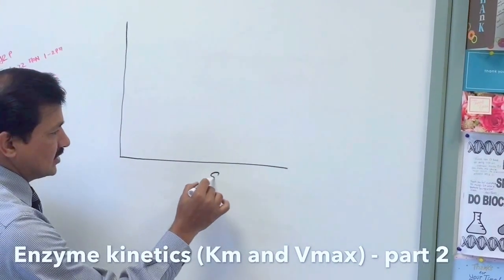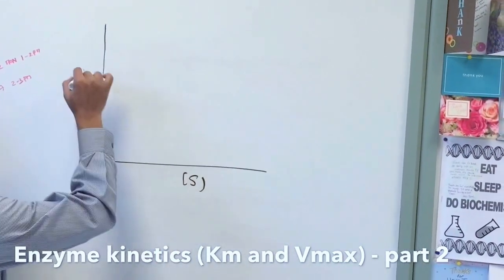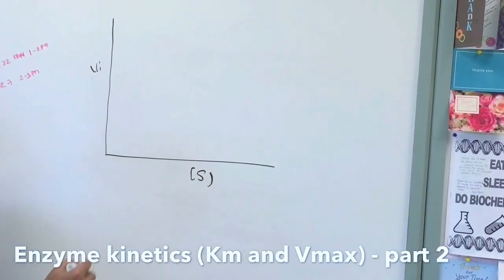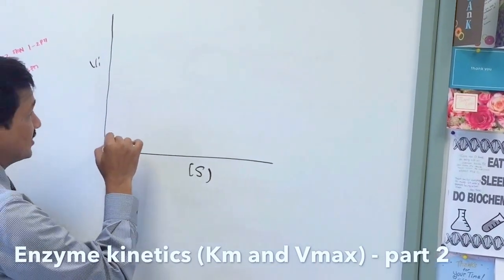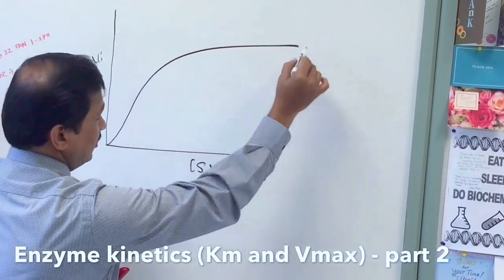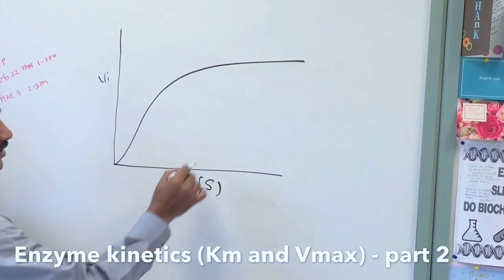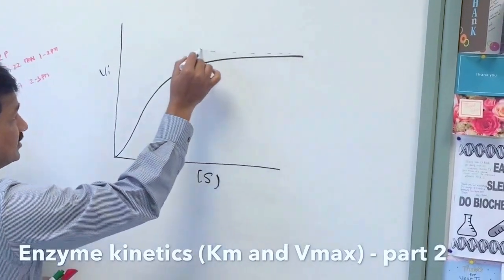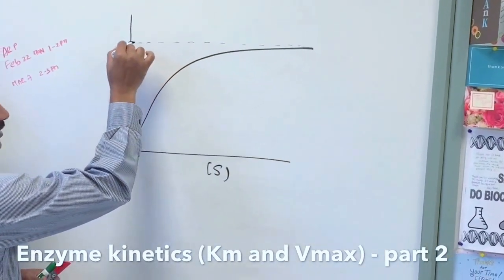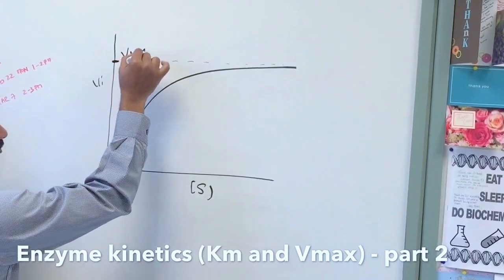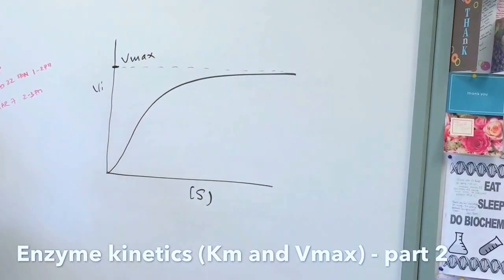Here is the substrate concentration in the x-axis, y-axis you have initial velocity of the reaction. In the fixed enzyme concentration, when you go on increasing the substrate, it's going to reach saturation. Velocity is going to reach saturation. This point is referred to as Vmax, maximum velocity of an enzyme.